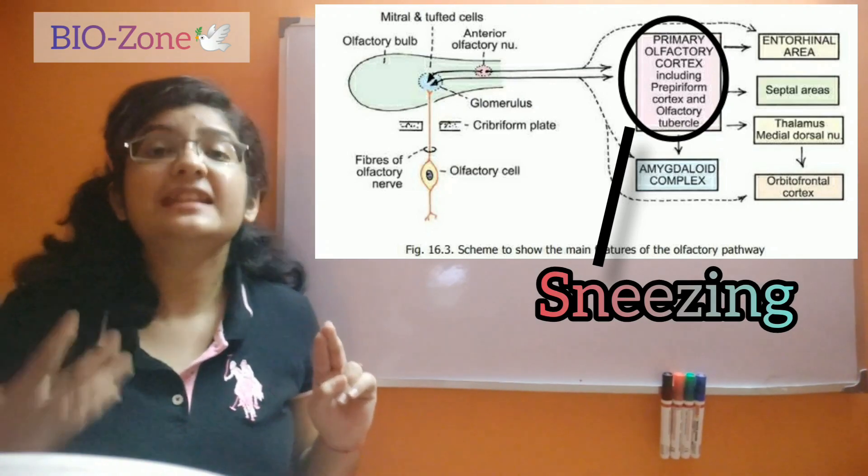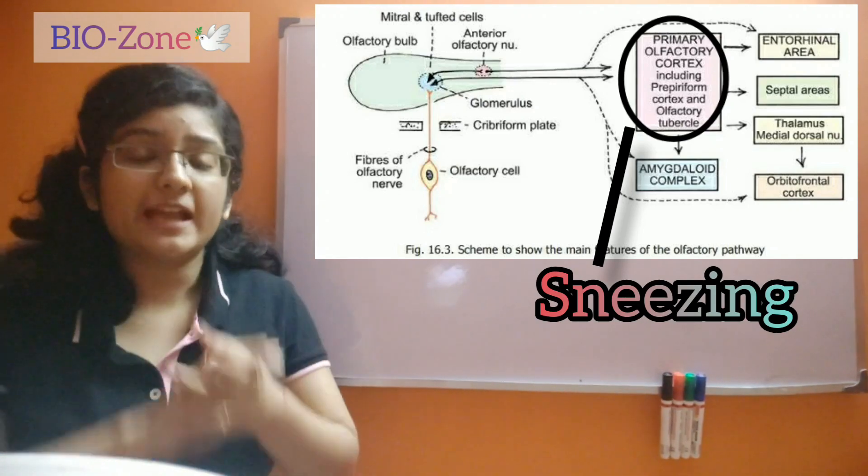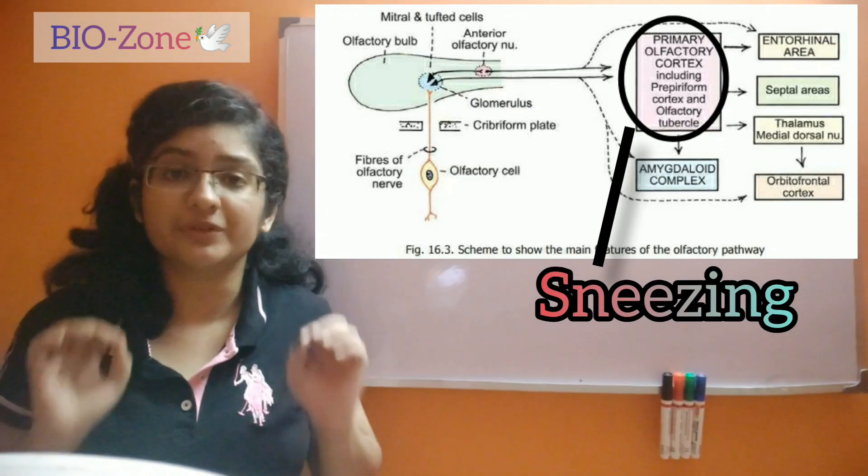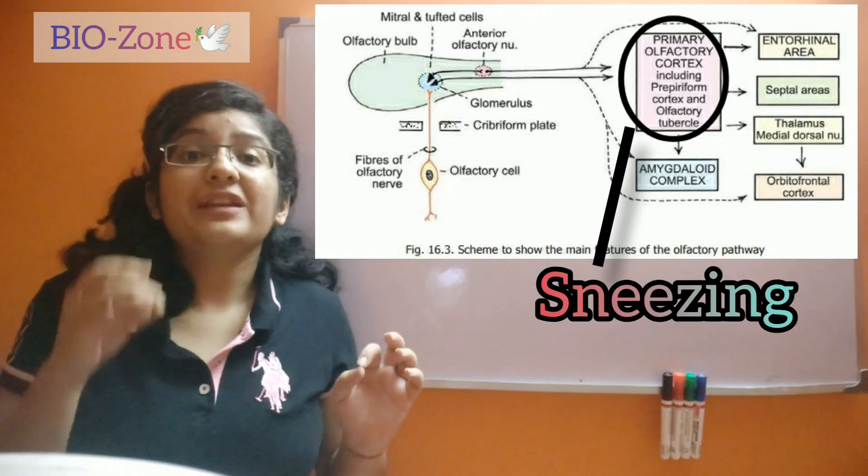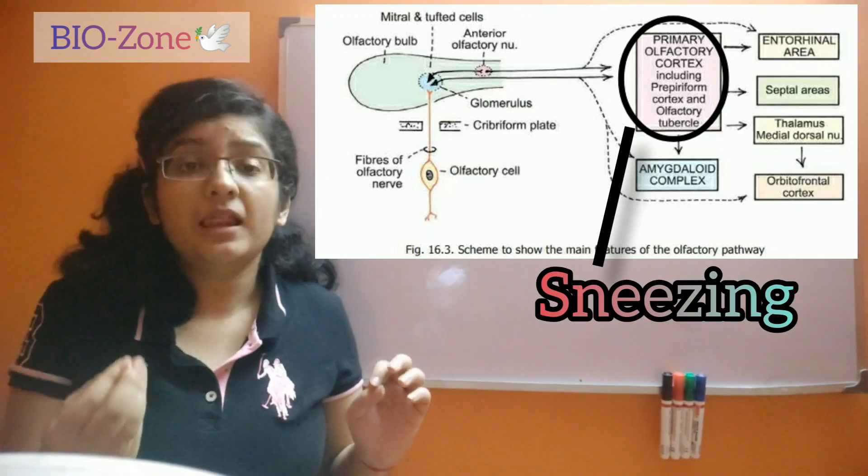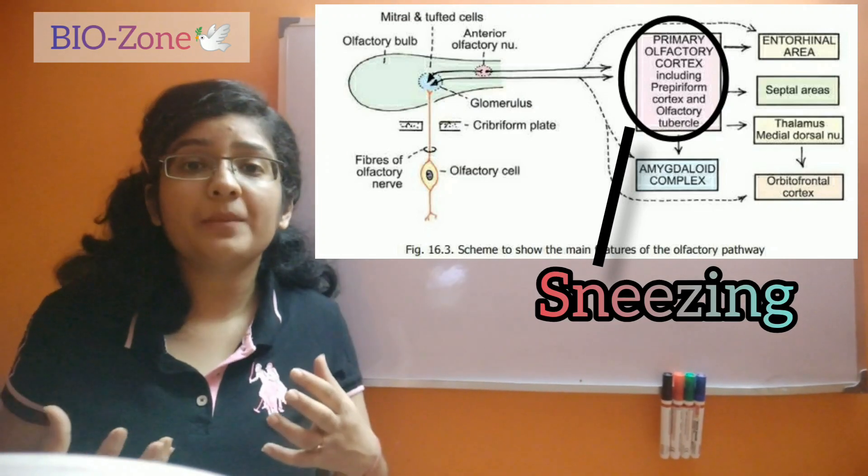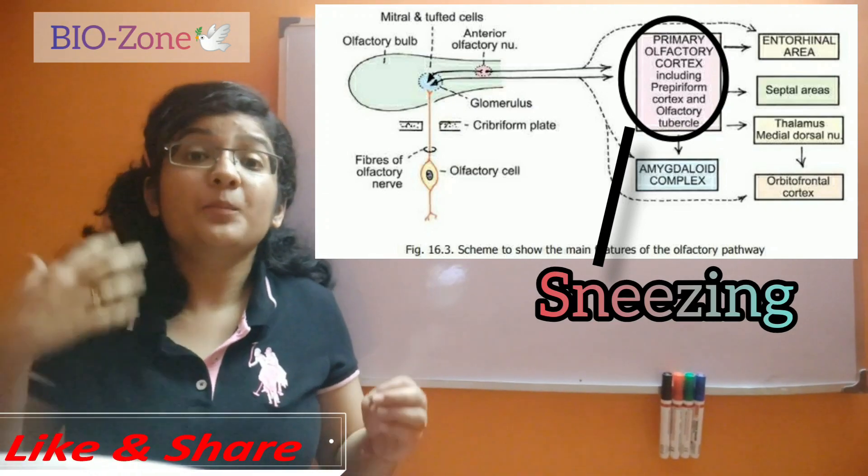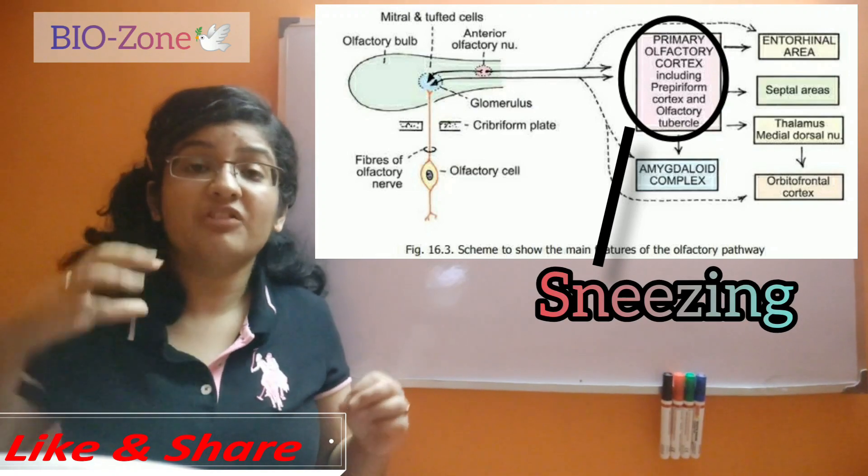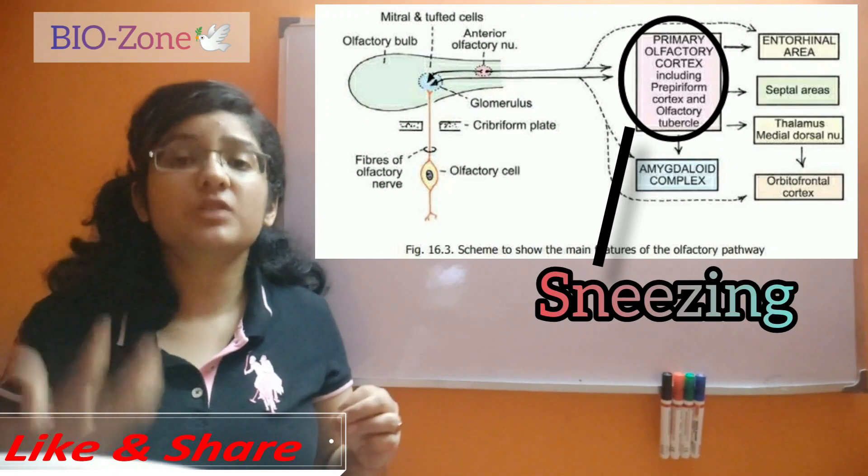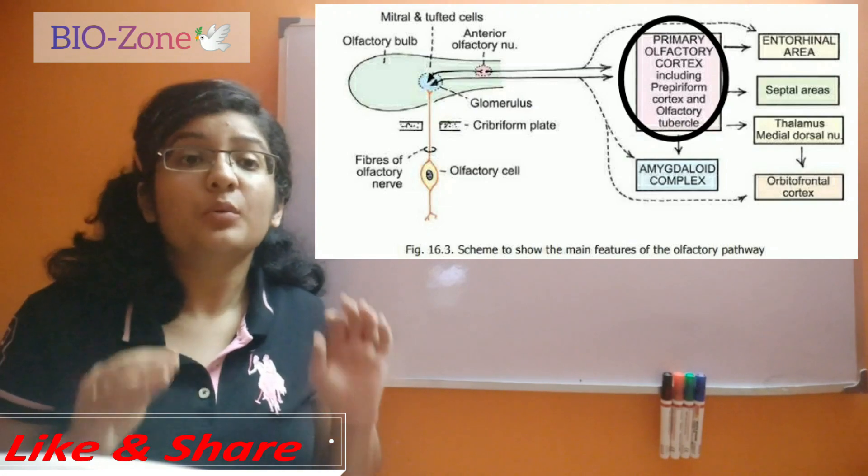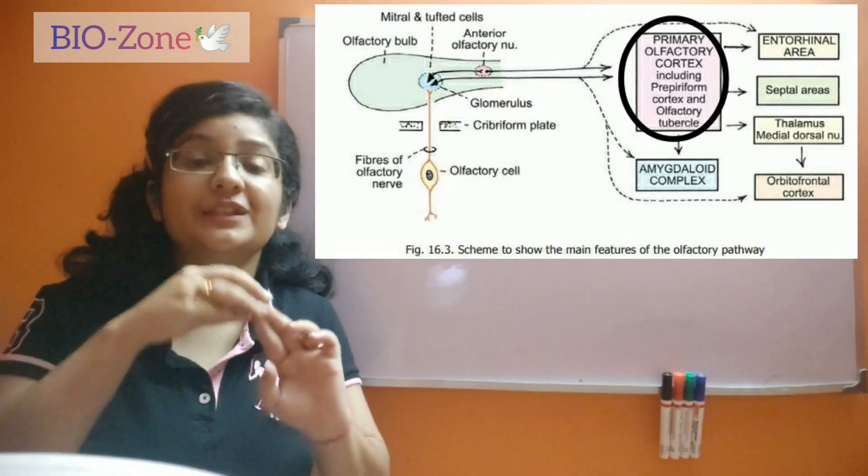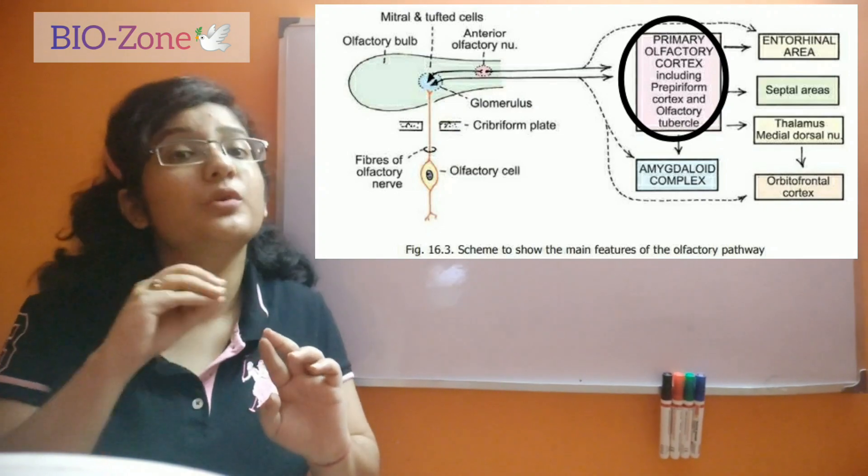Now what is the sniffing process? Say whenever you are breathing normally, this process is called quiet breathing. Now when we encounter a smell for the first time, what happens? If you like that smell, you start smelling more and more deeply. Now this deep smelling process is called the sniffing process, which is generated by this set of neurons called the piriform cortex.